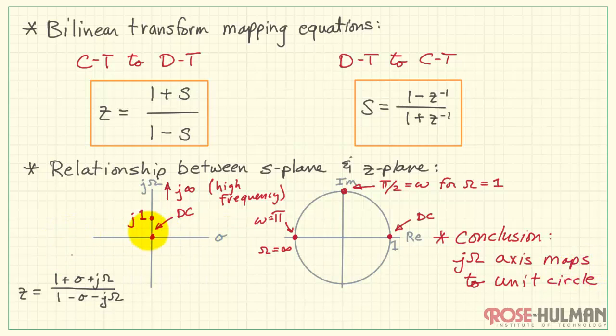Well, let's try some variations of sigma. I'll stay on the sigma axis here. Let's try plugging in sigma is minus 1 and capital omega is 0. Evidently, this spot translates to the origin of the z-plane.